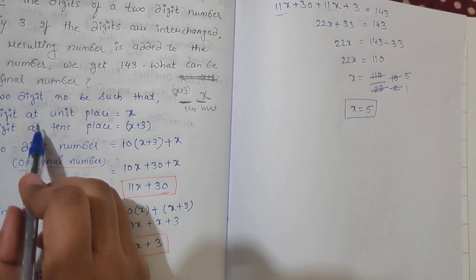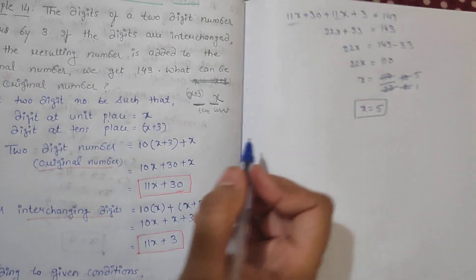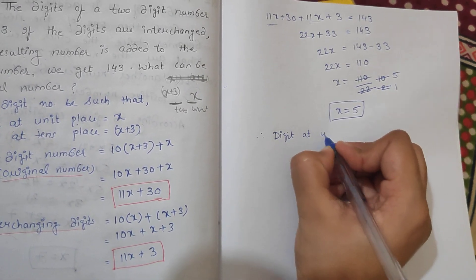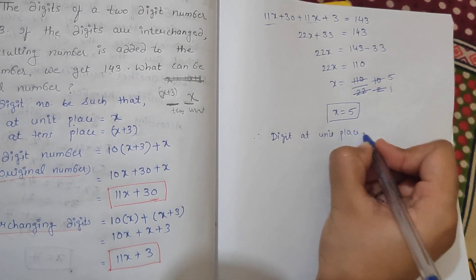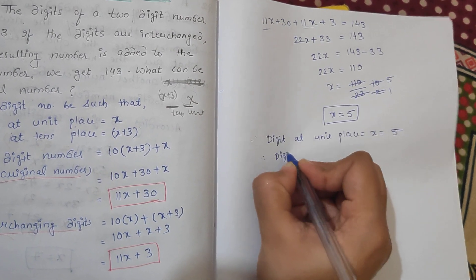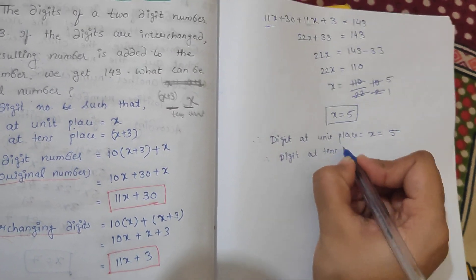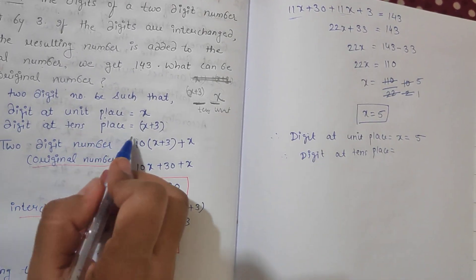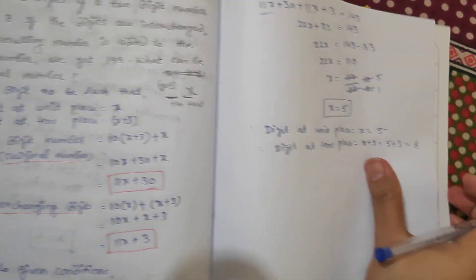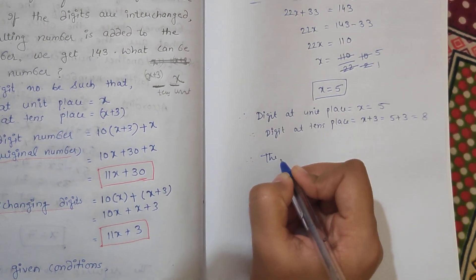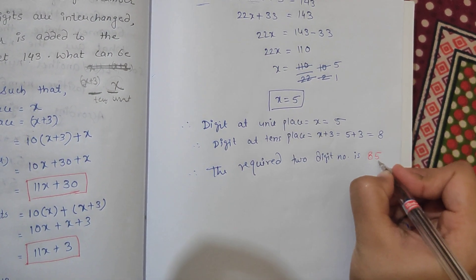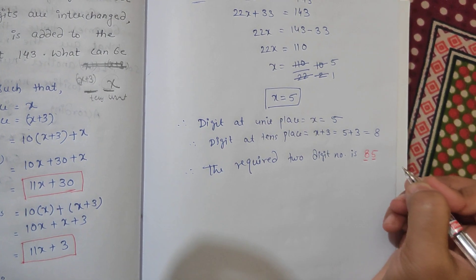So x was the digit at unit place, therefore the digit at unit place equals x equals 5. The digit at tens place was x plus 3, that is 5 plus 3 equals 8. Therefore the required two digit number is 85, where 5 is at unit place and 8 is at tens place.